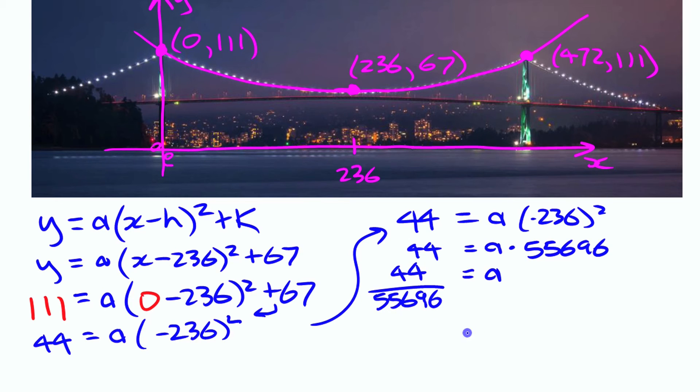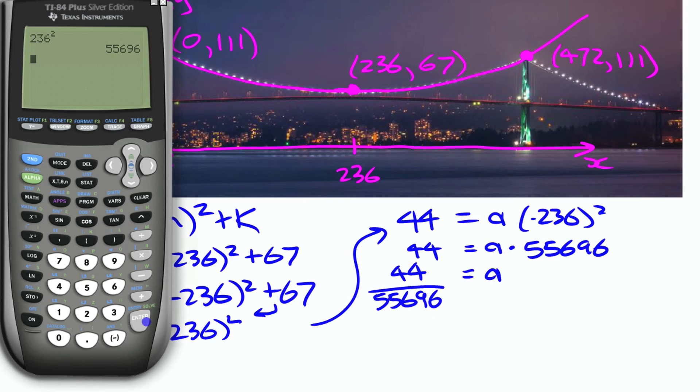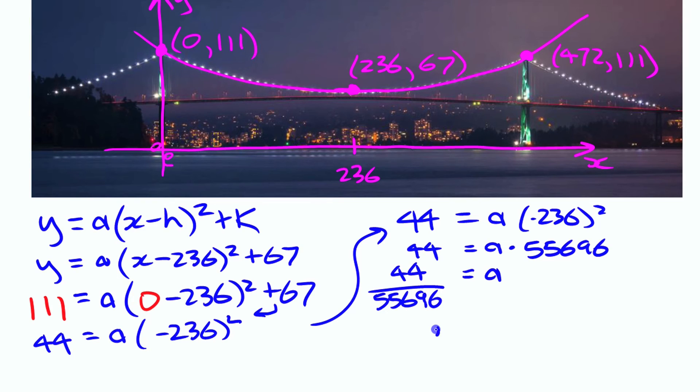So 55,696 times a equals 44. So I have a is 44 over 55,696. That's my a value. I could reduce it to lower terms. I could write it as a decimal. So if I do 44 divided by 55,696, it gives it to me as a decimal. It actually gives it to me in scientific notation, so that is actually approximately 0.00079.